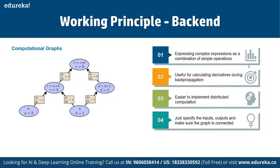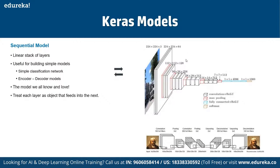We have multiple models we can work with in Keras. First, we have the Sequential model. The core idea of the sequential API is simply arranging the Keras layers in a sequential order. Most ANNs also have layers in sequential order, and the data flows from one layer to the other in the given order until the data finally reaches the output layer. A simple ANN model can be created by simply calling the sequential API, which lets us define the model and get started.